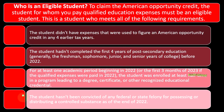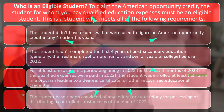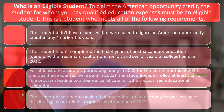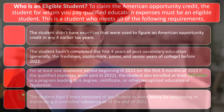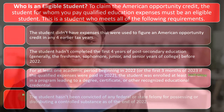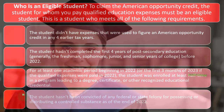Condition four: the student hadn't been convicted of any federal or state felony for purposes of distributing a controlled substance as of the end of 2022. That's kind of a random one, but there it is.